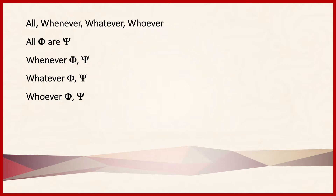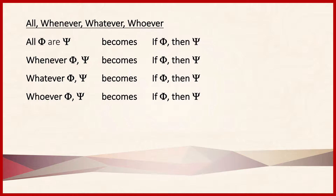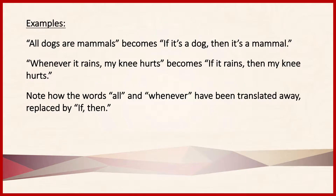The first set of terms — 'all,' 'whenever,' 'whatever,' and 'whoever' — are quite easy to translate. 'All phi are psi' becomes 'if phi, then psi.' 'Whenever phi, psi' also becomes 'if phi, then psi,' and so on. For example, 'all dogs are mammals' is equivalent to 'if it's a dog, then it's a mammal' — dogs is phi, mammals is psi. And 'whenever it rains, my knee hurts' becomes 'if it rains, then my knee hurts.'